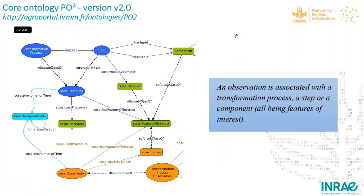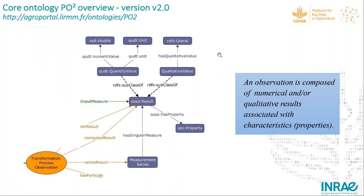The orange concepts shown at the bottom of the slide show that an observation is associated with a transformation process, or with a step, or with a component associated to a step. An observation is composed of numerical and/or qualitative results which are themselves associated with some characteristics.